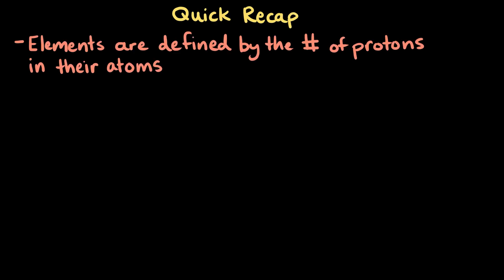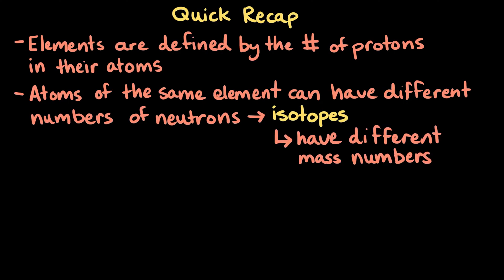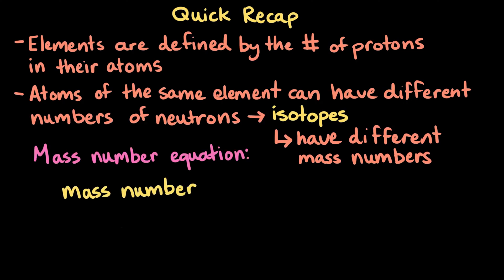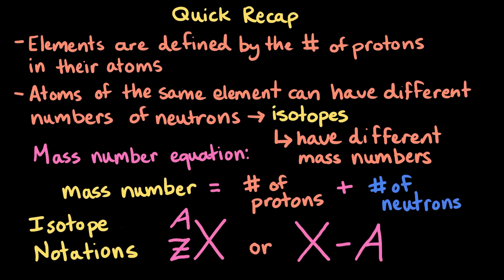Let's wrap up with a quick recap. Elements are defined by the number of protons in their atoms, but atoms of the same element can have different numbers of neutrons — these are called isotopes. Because isotopes have different numbers of neutrons, they also have different mass numbers, which are the sum of the protons and neutrons in each isotope's atom. An atom's mass number is described by: mass number equals the number of protons plus the number of neutrons. Lastly, we can describe isotopes using a couple of different notations, which are shown below.